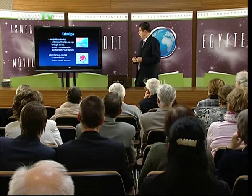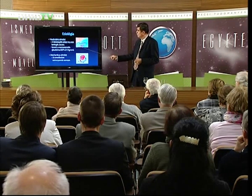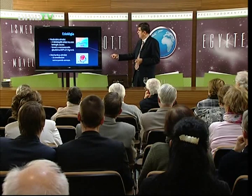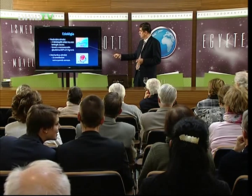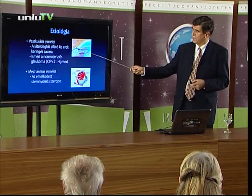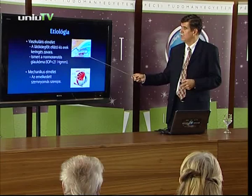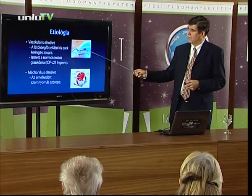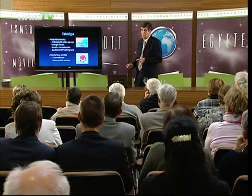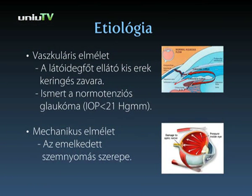A glaukóma megértéséhez tudnunk kell, hogy a csarnokvíz a szivárványhártya mögött, a hátsó csarnokban termelődik a sugártestben, és a szivárványhártya és a szemlencse között előre jut az elülső csarnokba, és ez a csarnokzugban folyik el a Schlemm-csatornán keresztül, a kötőhártya alá kerül, és ott szívódik fel. Ha a csarnokvíz termelődése fokozódik, vagy az elfolyás akadályozottá válik – és inkább ez a második a gyakoribb –, akkor tud a szemnyomás megemelkedni. Ez a magyarázata a mechanikus elméletnek.